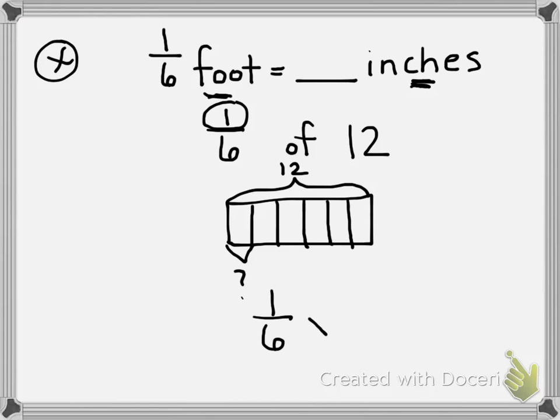1 sixth times 12 over 1. Now I need to ask myself, can I cross-simplify? Is there a number that goes into both 6 and 12? And the answer is yes, 6. 6 divided by 6 is 1, 12 divided by 6 is 2. I'm going to multiply across. 1 times 2 equals 2, 1 times 1 equals 1. 2 over 1 equals 2.